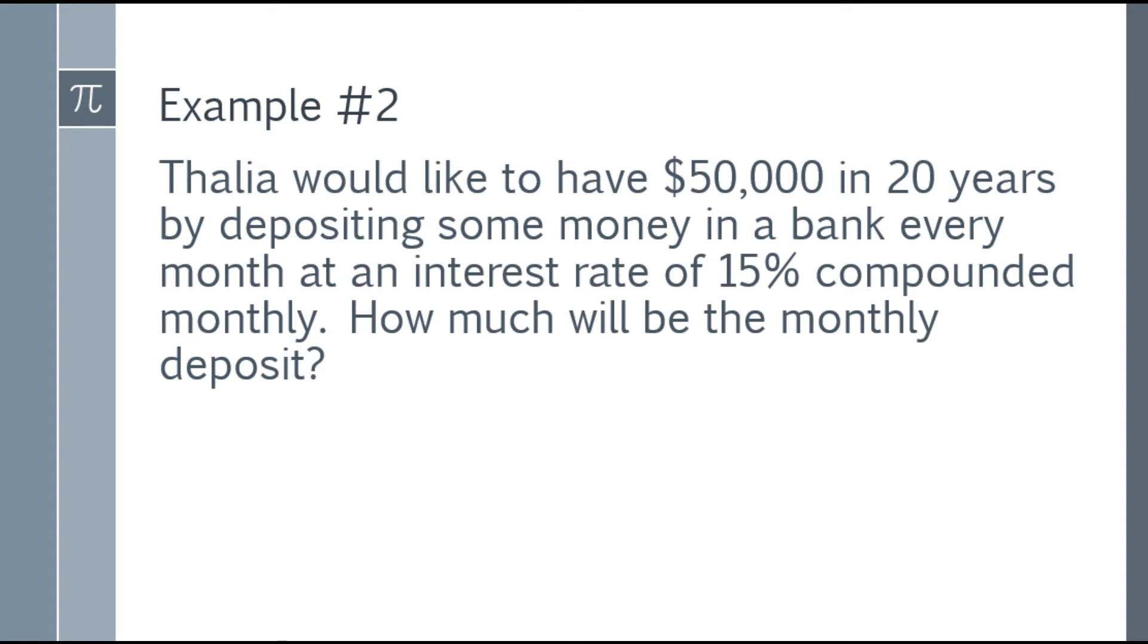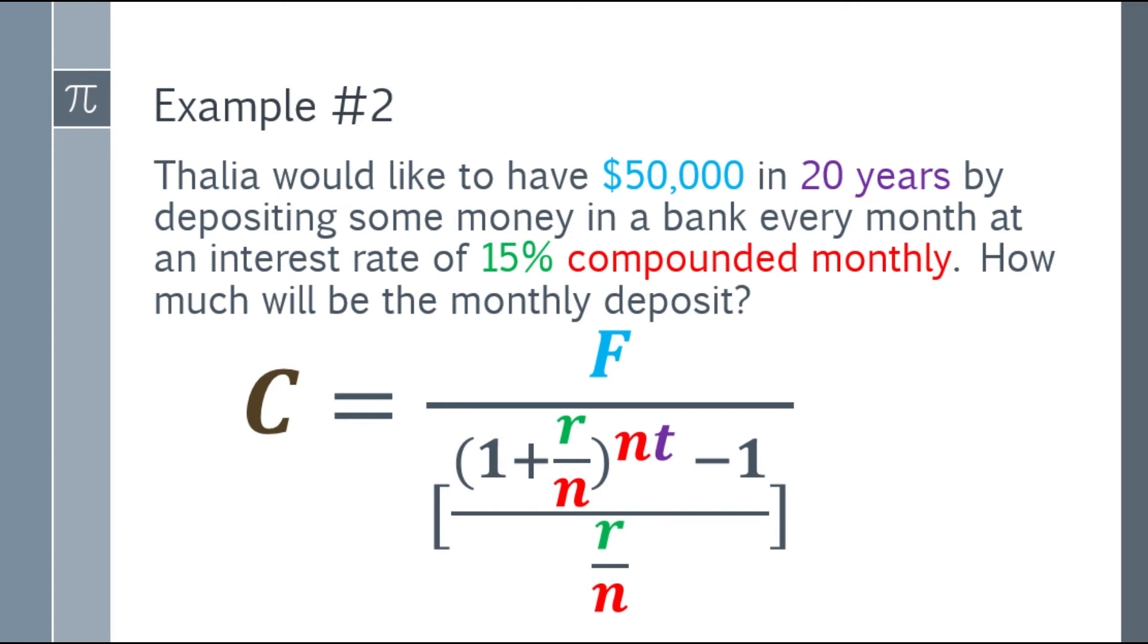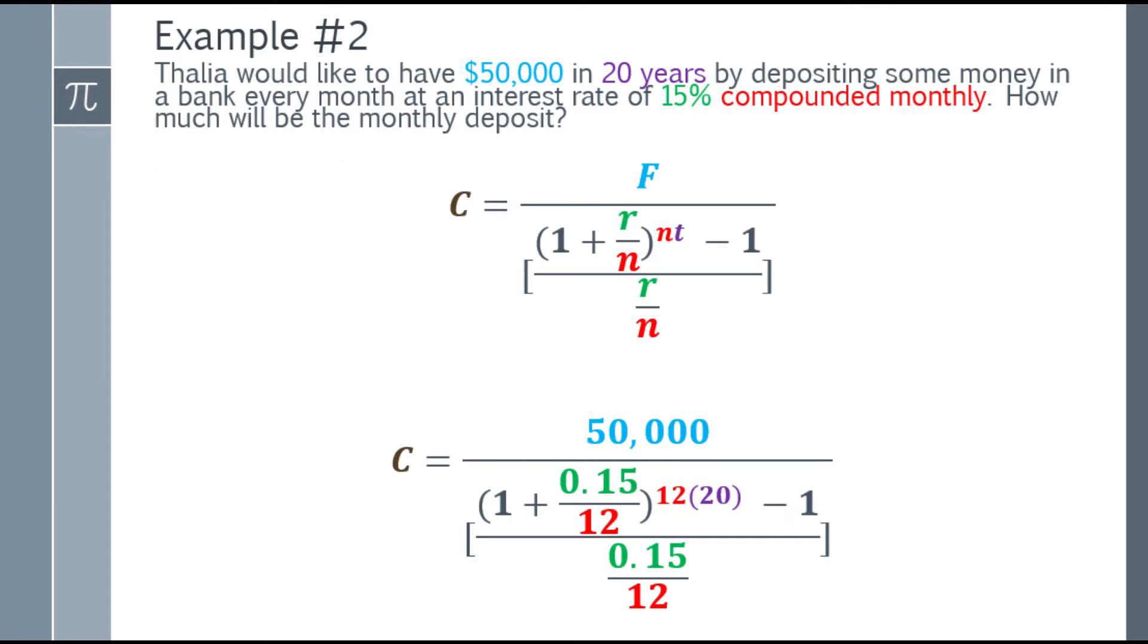Example number 2: Thalia would like to have $50,000 in 20 years by depositing some money in a bank every month at an interest rate of 15% compounded monthly. How much will be the monthly deposit? We need to substitute the values. Cash flow equals $50,000 in the numerator. In the denominator, we have the complex fraction. In the parentheses, 1 plus 0.15 over 12. That's 0.15 because it's 15%, compounded monthly so it's 12. The exponent is n times t, which is 12 times 20. Subtract 1, and the fraction at the bottom is 0.15 over 12. You can see on screen the order of operations to prioritize.